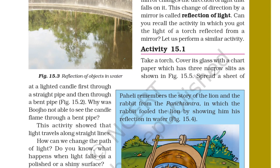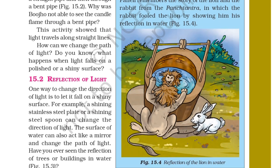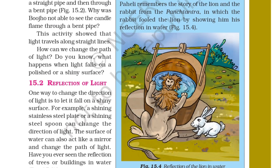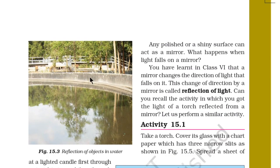How can we change the path of light? Do you know what happens when light falls on a polished or shiny surface? This is called reflection — section 15.2, Reflection of Light. One way to change the direction of light is to let it fall on a shiny surface, such as a shining stainless steel plate or a steel spoon. The surface of water can also act like a mirror and change the path of light. Have you ever seen the reflection of trees or buildings in water?